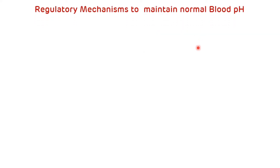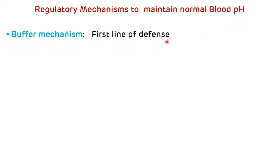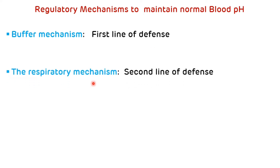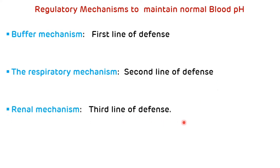The regulatory mechanisms available for maintenance of normal blood pH are: first, the buffer mechanism — called the first line of defense; second, the respiratory mechanism — called the second line of defense; and third, the renal mechanism — called the third line of defense. In today's video we will discuss the buffer mechanism in detail.